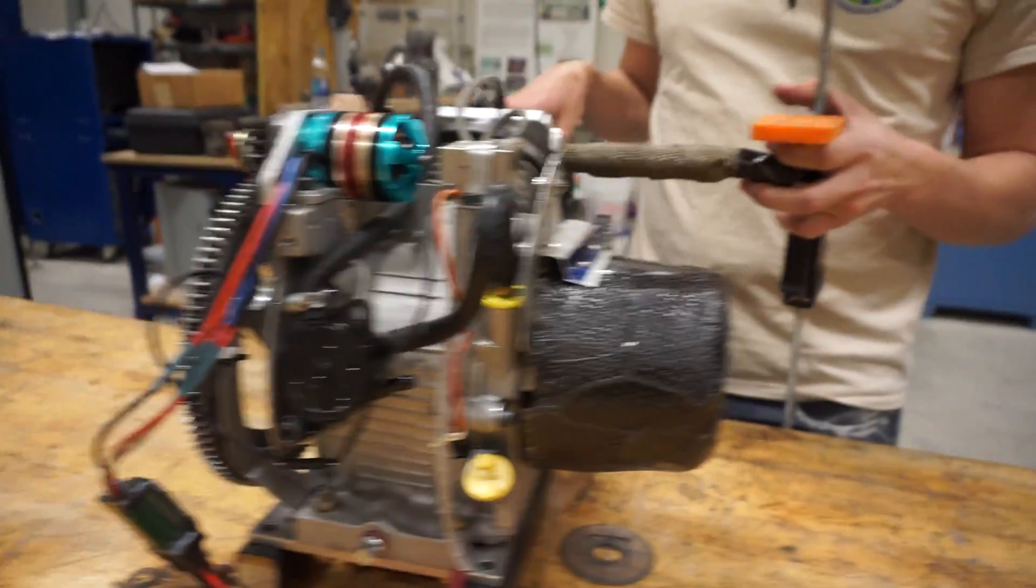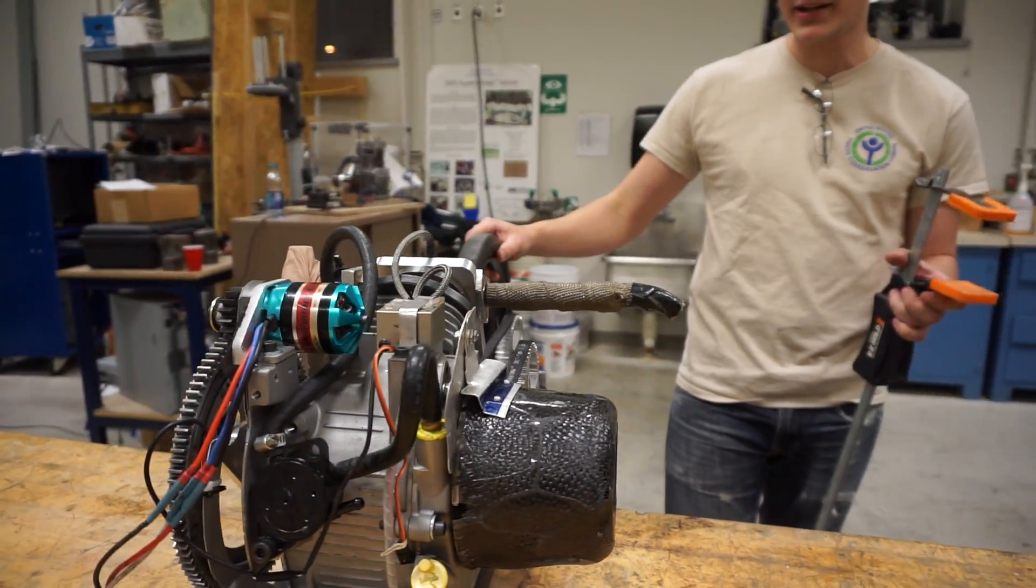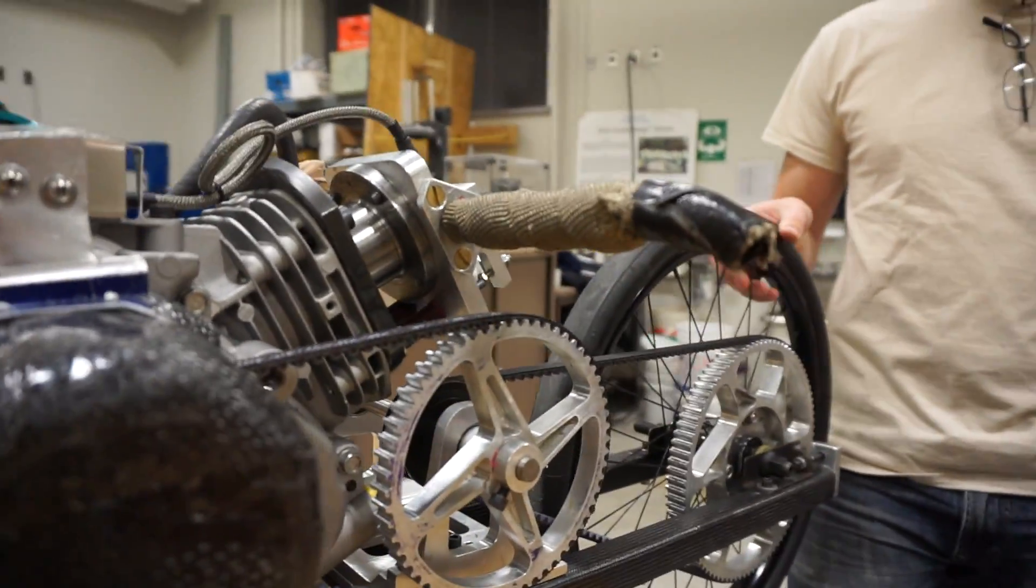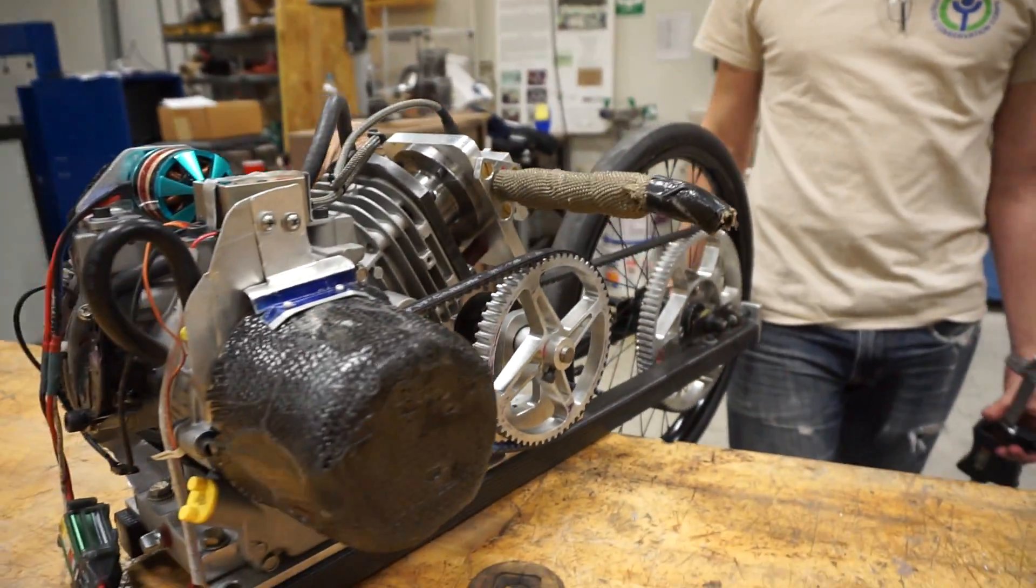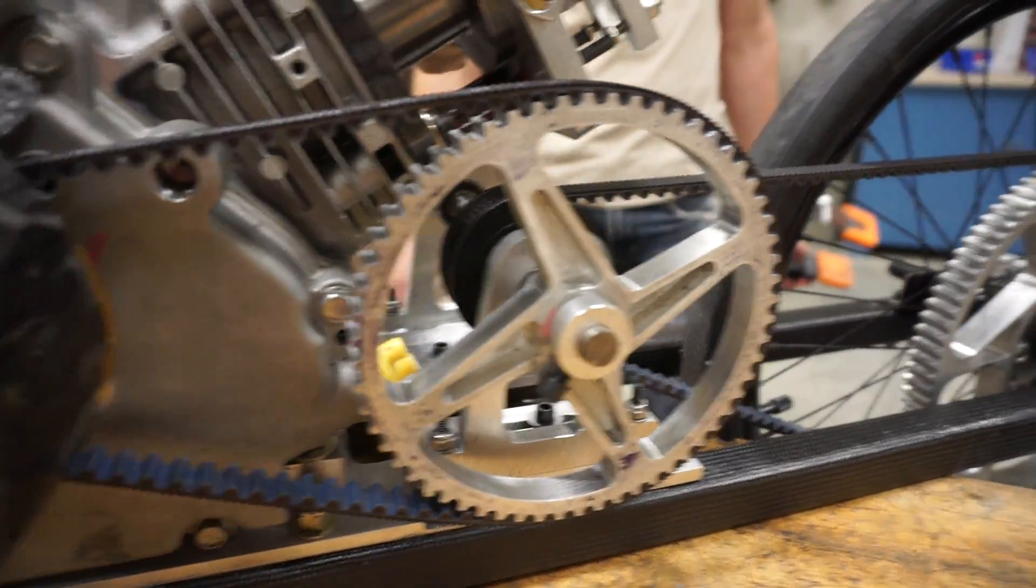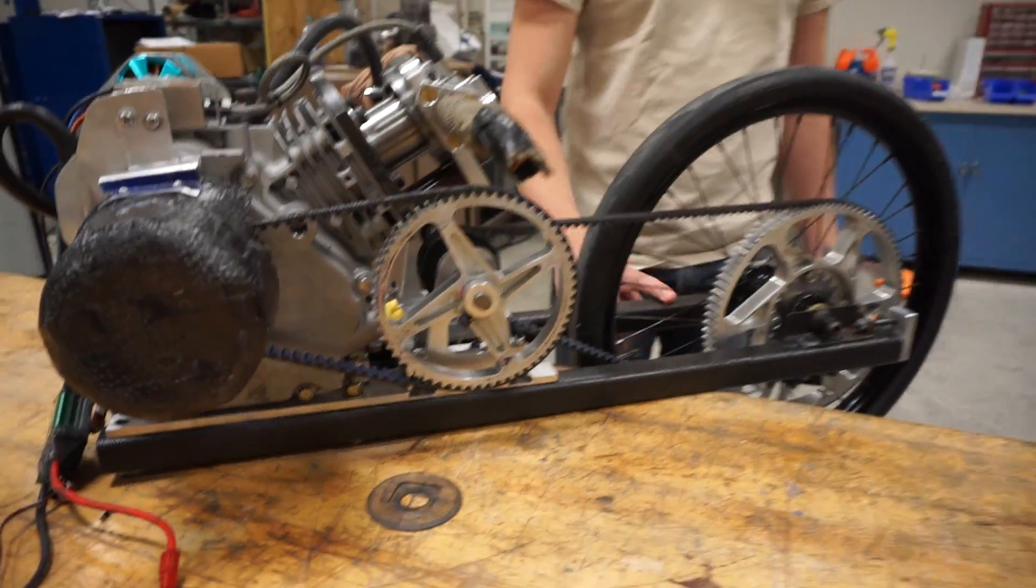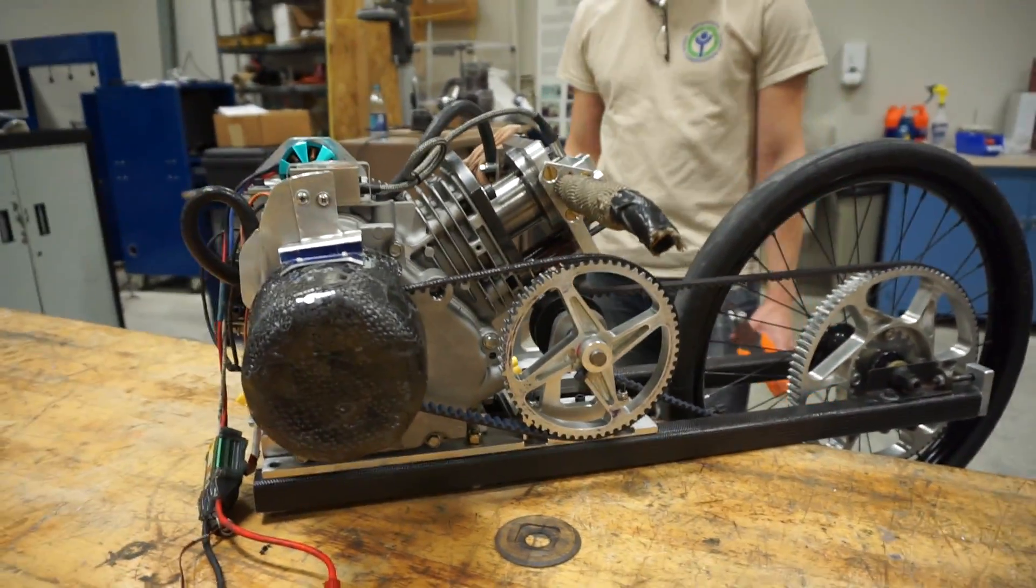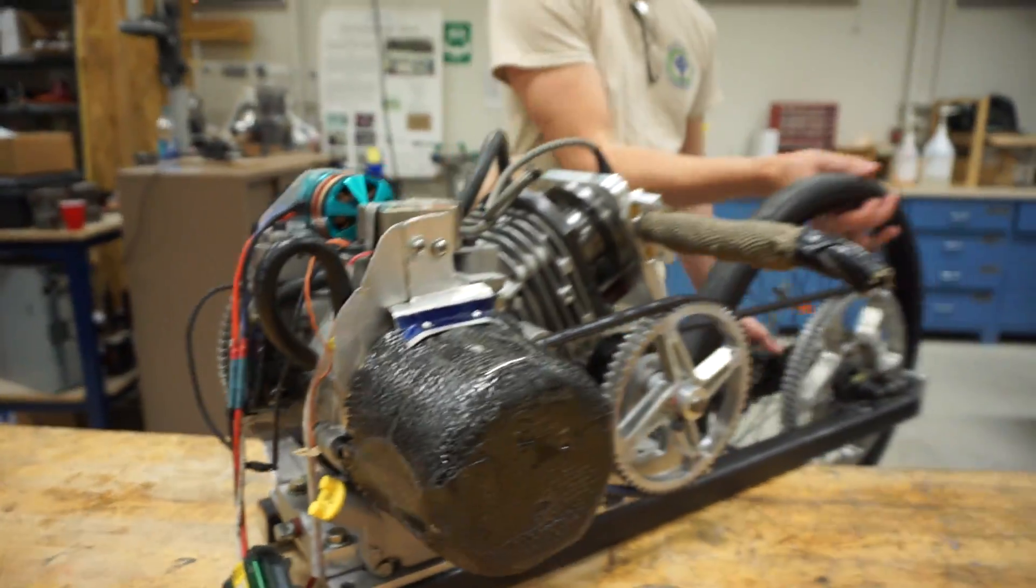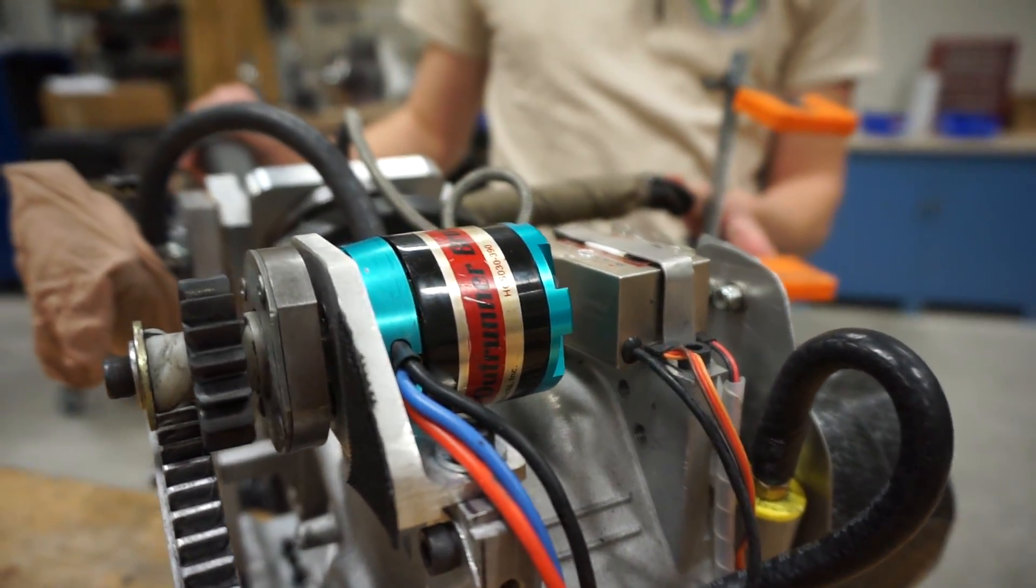GX35 valves, carbon fiber push rods, full roller rocker, and is still using the stock Briggs & Stratton cam. The exhaust you see here, it's covered in header tape right now, but that's an actual miniature glass pack we had custom CNC milled for us, so that it sounds nicer.